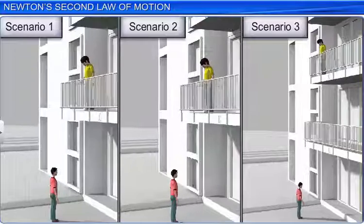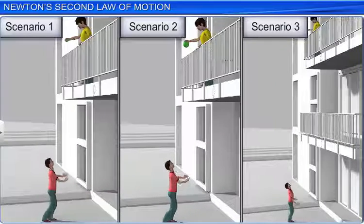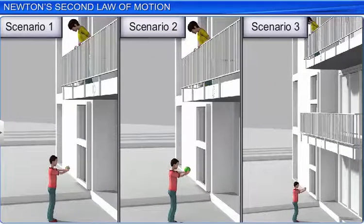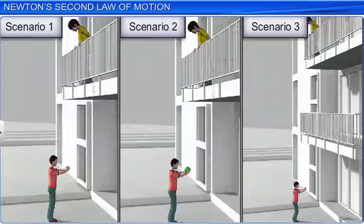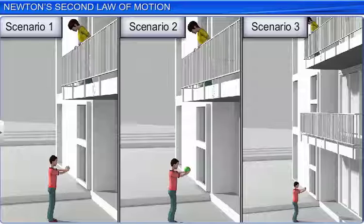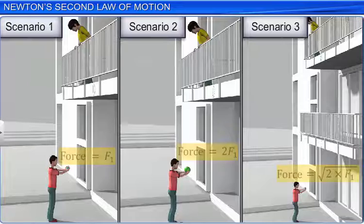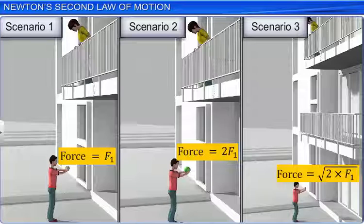In all these three scenarios, the ball has some momentum when it touches the hands of the boy catching it. However, the momentum becomes zero as the ball comes to rest due to the force applied by the hands for some time. The force required to stop the ball and the length of time the force is applied are related to each other.